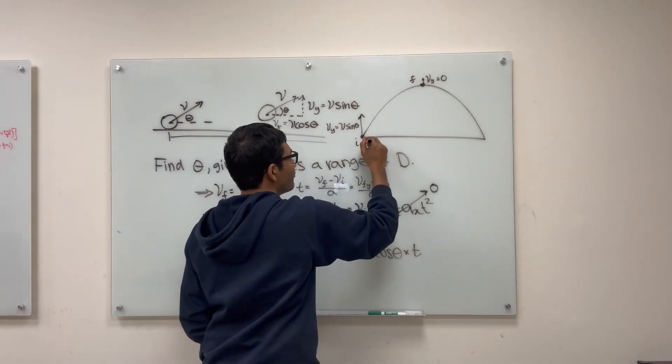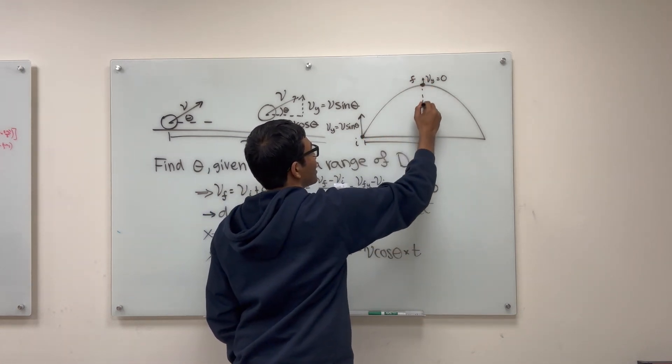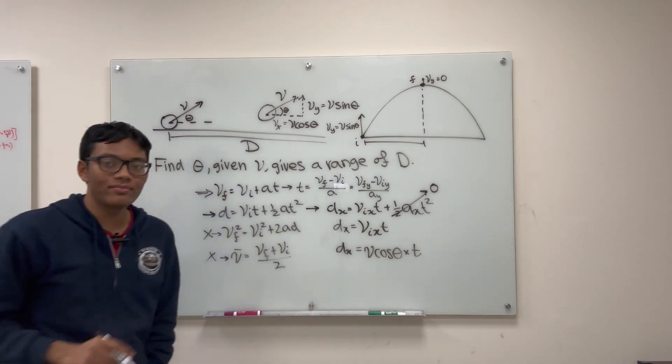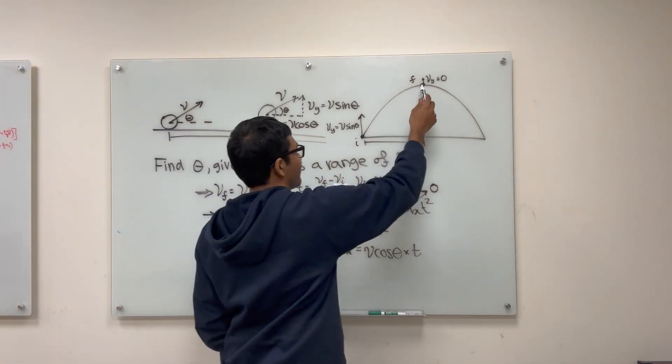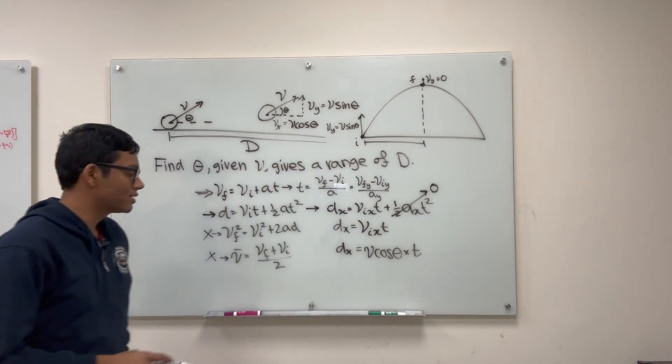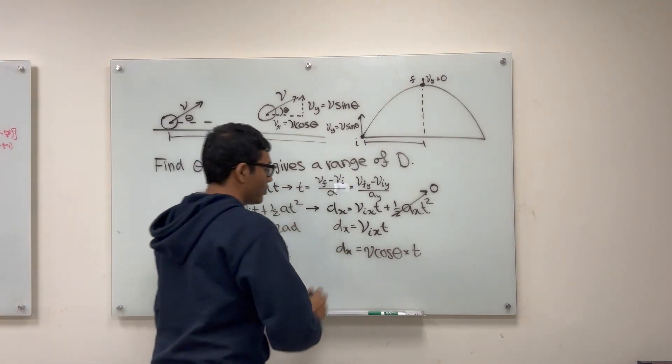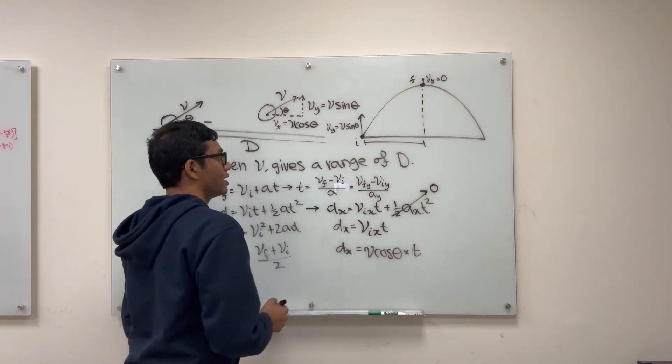So if we plug this into our formula, we'll get just half the airtime, right? Because this is half of the ball's full trajectory. So keep that in mind. So now if I go ahead and go through the motions, let's go ahead and do that.